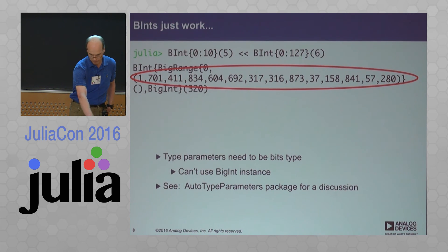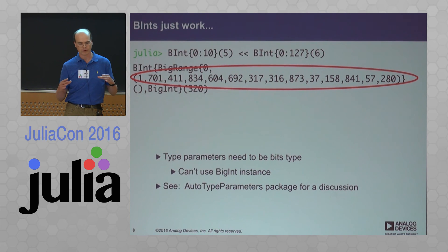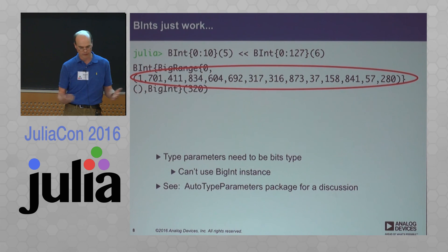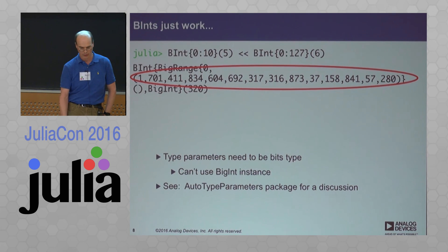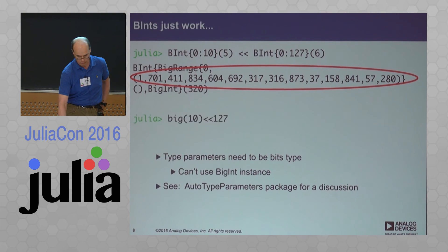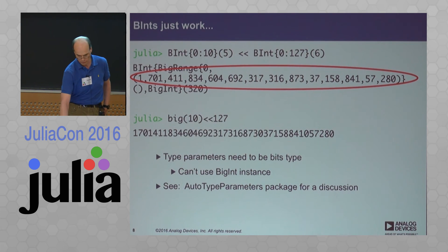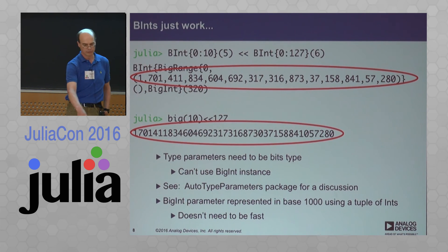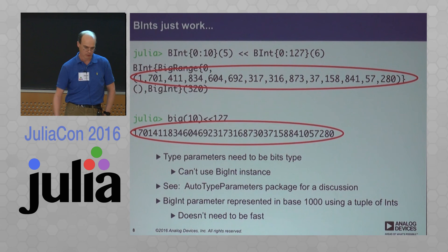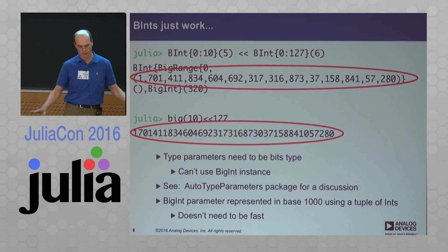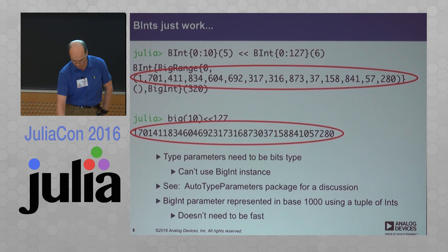The problem is that type parameters have to be a bits type — I can't have a BigInt instance in there. So what I've done is, when I detect I need to represent a number which is too large for int128, I just encode it into a tuple in base 1000. You can see the correspondence between the BigInt value and the tuple which has been encoded as a type parameter. It's a bit of a hack to get around the issue, but I can encode arbitrarily large constants in the type, which is all I want to do. I don't care about speed because this is done once at compile time. This is absolutely fine — it doesn't overflow, doesn't do anything bad.